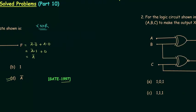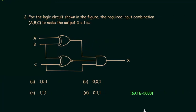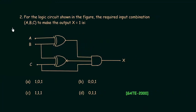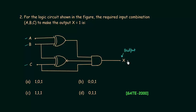Now we move to problem number two. In the second problem, for the logic circuit shown in the figure, the required input combination A, B, C to make the output X equal to one is asked. X is the output and we have three inputs A, B, and C. We have to find the combination so that output X is equal to one.